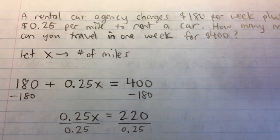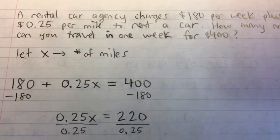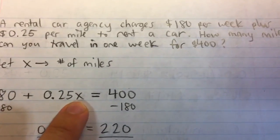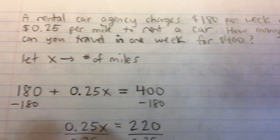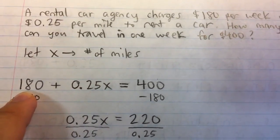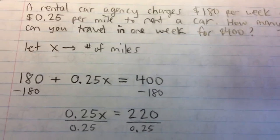You can think about it if there was, say, 4 miles driven, then it would be 0.25 times 4, which is $1. And so your total cost would be, for one week, $180 plus $1, $181.